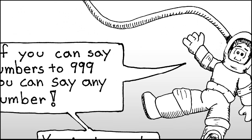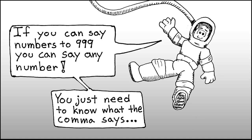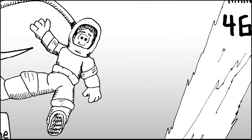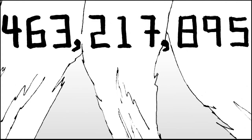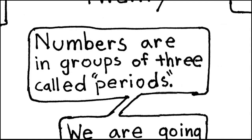If you can memorize those three rules, you can say any number. If you can say numbers to nine hundred and ninety-nine, you can say any number in the world. All you need to do is know what the comma says. Now let's look at this much bigger number. We see there are two commas. Those commas, while small, are very, very important, because they separate the number into something called periods — groups of three, called periods.